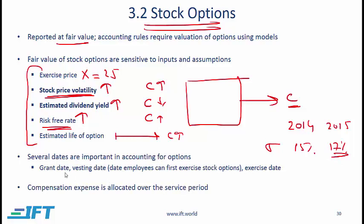When a company grants stock options there are several important dates. The grant date is obviously when the options are being granted. The vesting date is when employees can first exercise the stock options — if an employee can exercise after 4 years, then 4 years is the vesting period and the date 4 years later is the vesting date. After the vesting date the employee can then exercise the options. The compensation expense is allocated over the service period — so if the value of options is 100 million with a service period of 4 years, we allocate this expense equally over the 4 years.